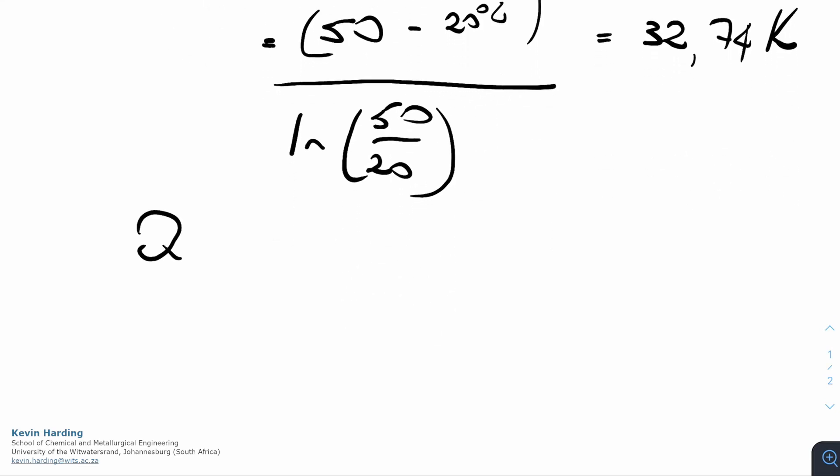We then take that value and go back to Q equals UA delta T, and we fill in the numbers. We said that U, we looked back at the question, was 500 watts per meter squared Kelvin,